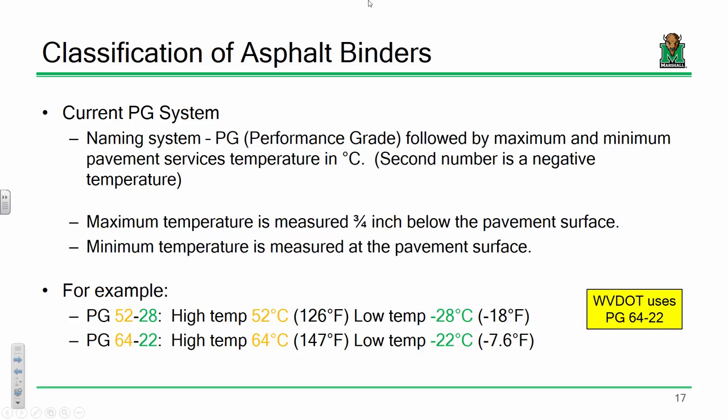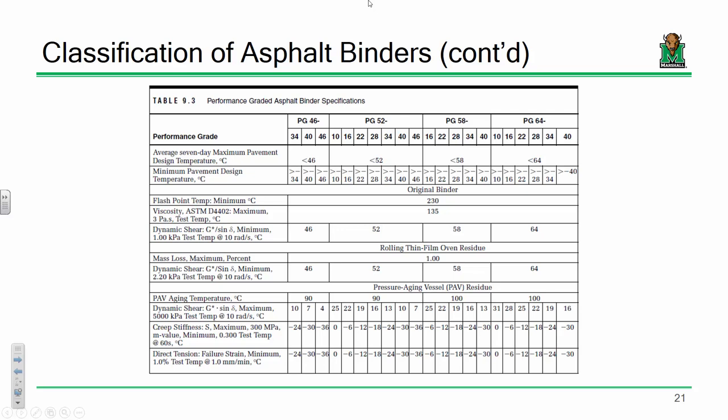The most common way of classifying asphalt binders is the PG system — PG stands for performance grade. Based on a given performance grade, in order for an asphalt to be classified as, say, PG 52-28, it has to have a certain flashpoint temperature, a certain viscosity, a certain dynamic shear behavior, a certain aging temperature, and so on. All those properties are determined based on the tests I just mentioned. That's one of the big reasons we do all those tests — to classify a given asphalt binder.